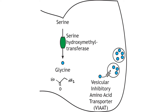Glycine is another inhibitory amino acid neurotransmitter, but unlike GABA, it is more common in the spinal cord than in the brain. Serine hydroxymethyltransferase converts the amino acid serine into glycine in the presynaptic terminal. The rate-limiting step for glycine synthesis occurs earlier in the pathway prior to serine synthesis.